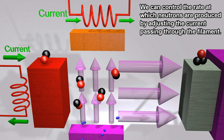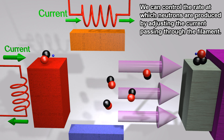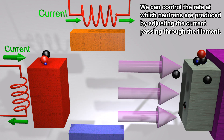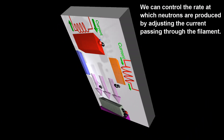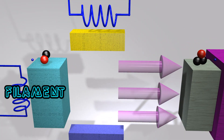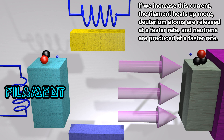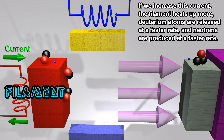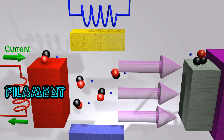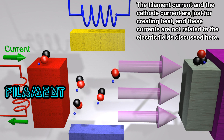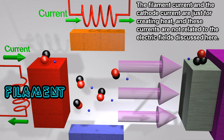We can control the rate at which neutrons are produced by adjusting the current passing through the filament. If we increase this current, the filament heats up more, deuterium atoms are released at a faster rate, and neutrons are produced at a faster rate. The filament current and the cathode current are just for creating heat, and these currents are not related to the electric fields discussed here.